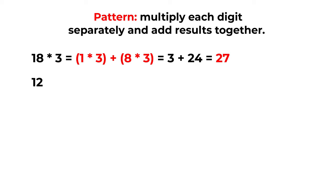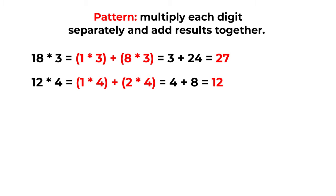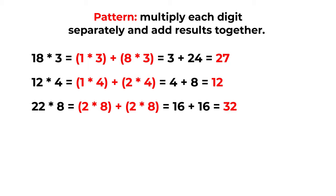In a similar way, 12 multiplied by 4 can be calculated as (1 multiplied by 4) plus (2 multiplied by 4), which equals 4 plus 8, equaling 12. And 22 multiplied by 8 is the result of (2 multiplied by 8) plus (2 multiplied by 8), which is 16 plus 16, equaling 32.